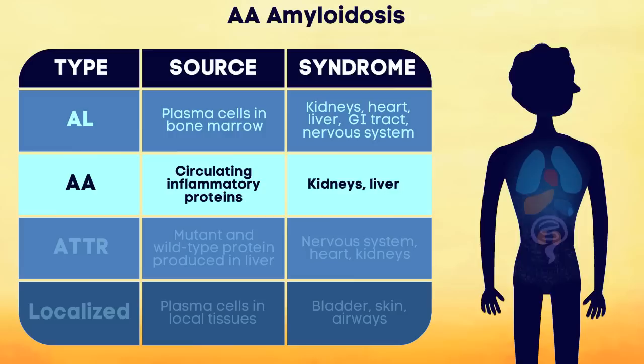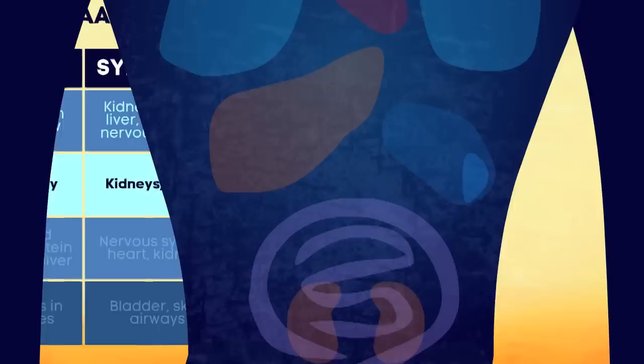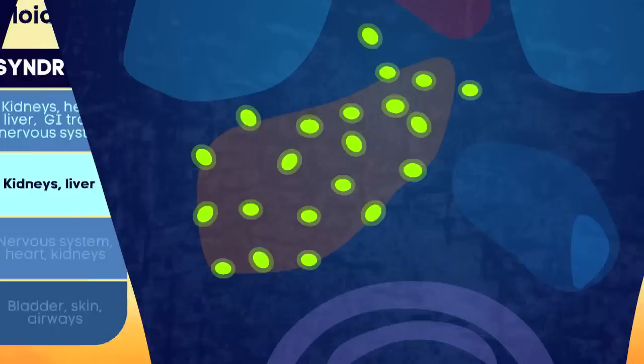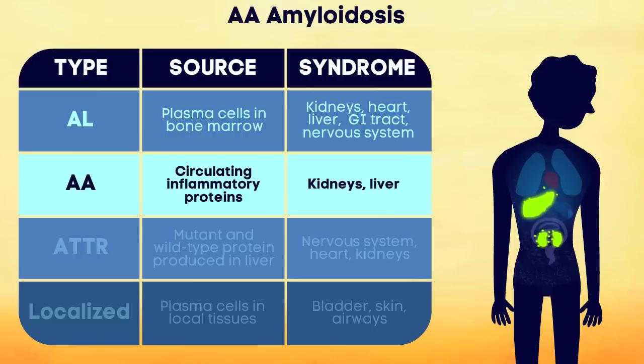In AA, or secondary amyloidosis, the disease results from increased levels of circulating serum amyloid A protein. The body produces this protein as a natural response to chronic infection or inflammation. The kidneys and liver are the main sites of amyloid deposition.